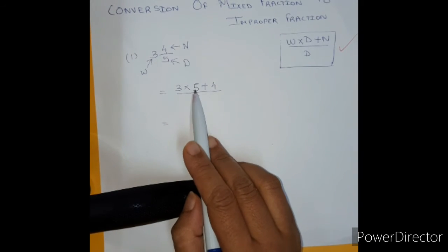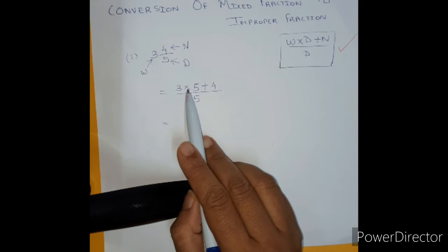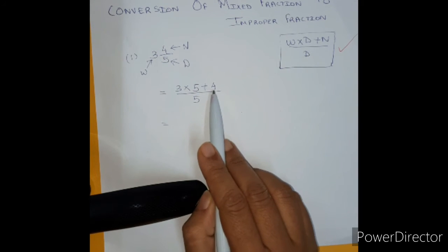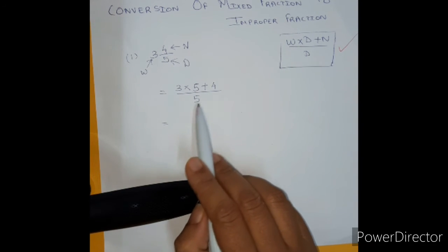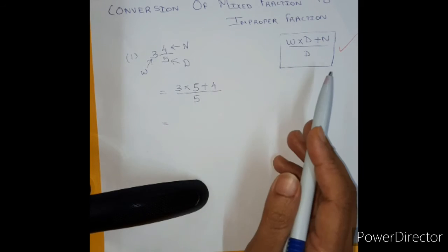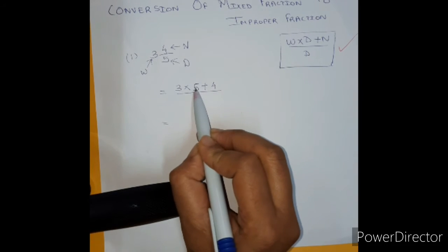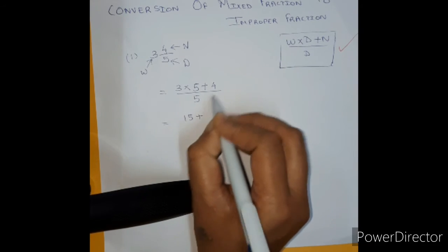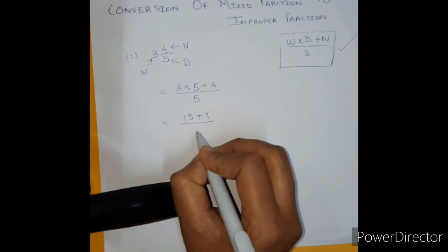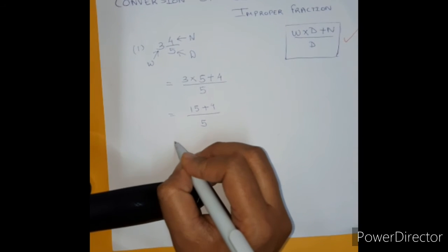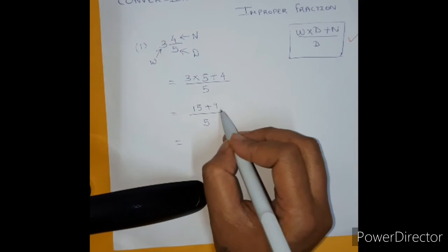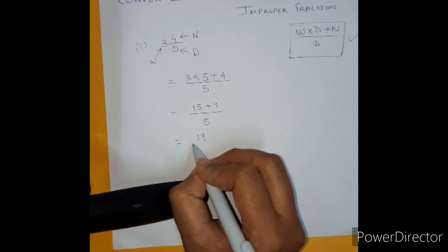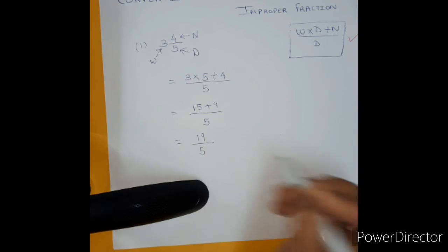What we are going to do is, let's first solve the multiplication then add the answer of this two to this and then divide, then you get the fraction, improper fraction. 3 times 5 are, or 5 times 3 are gives you 15 plus 4 upon 5 which will give me the answer 15 plus 4 will give you 19 upon 5.